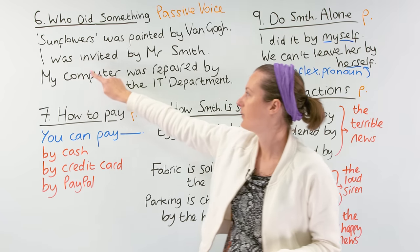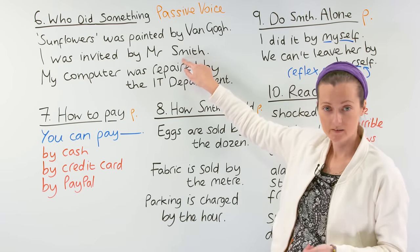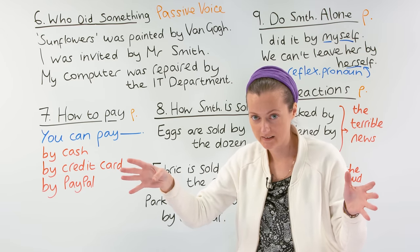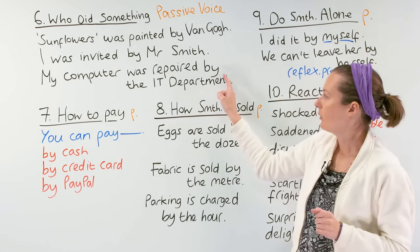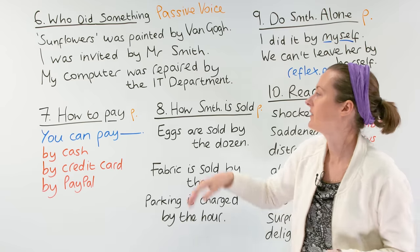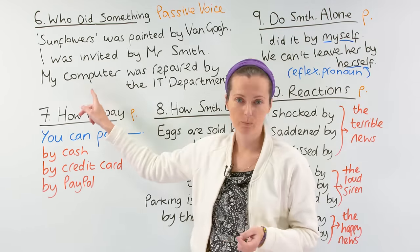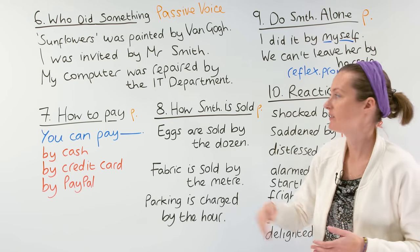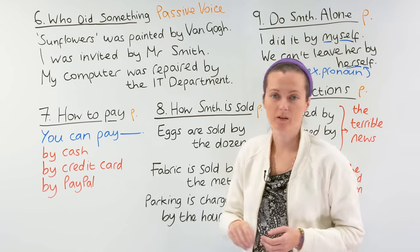Next example: 'I was invited by Mr. Smith' — Mr. Smith invited me would be the other way to say this. 'My computer was repaired by the IT department' — I can change that around and say 'The IT department repaired my computer.' So in all of these sentences, to form the passive voice we use the preposition 'by'.